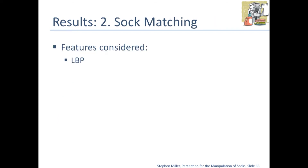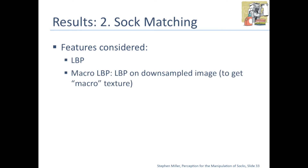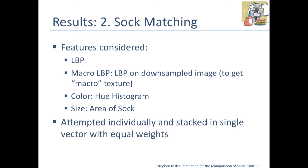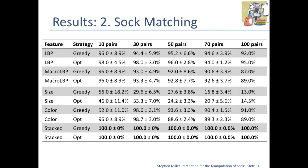For sock matching, we considered a number of features: LBP, macro LBP (LBP computed on a downscaled image to capture broader texture), color, and the size or area of the sock. We tried these individually and also stacked them together into a single vector with equal weights. As you can see, they all do fairly well, but once you stack all features together, regardless of whether you use the greedy or optimal strategy, you get a 100% success rate across the board.